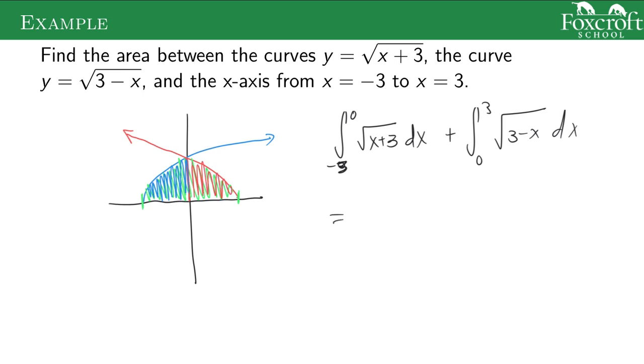I'm just going to have the calculator do it again. Let's see the integral from negative 3 to 0, square root of x plus 3. It gives me 3.464. And this one gives me the same answer. So I'm going to multiply that by 2. I get 6.928.